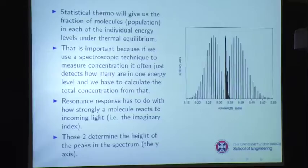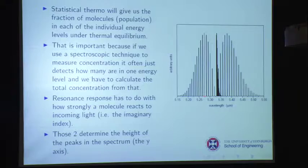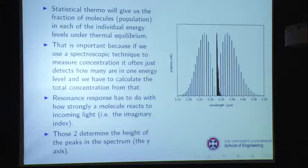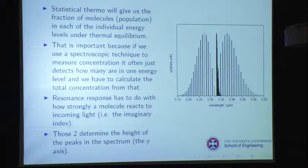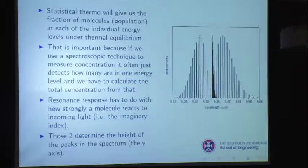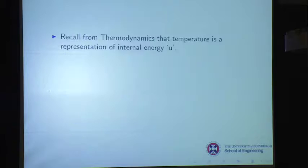When we measure concentration using a narrow band laser technique, we're often just looking at one energy level — pumping a molecule from one level to the next, so we're only hitting that lower level. We need to know what fraction is in that level to know the total concentration. Resonance response has to do with how strongly a molecule reacts, going back to the Lorentz atom and the imaginary index. We've already spent two lectures talking about the horizontal axis; now we want to talk about the vertical axis. STAT-MEC and resonance response determine the vertical axis, and line broadening is something you can't avoid.